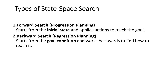What are the different types of state space search? There are two types: forward search and backward search. Forward search, also called progression planning, starts from the initial state and applies actions to reach the goal state. Backward search starts from the goal condition and works backward to find how to reach it. I have made separate videos on both of these if you want to check them out.